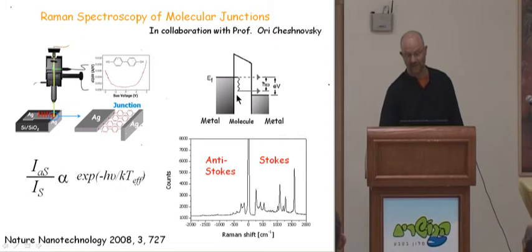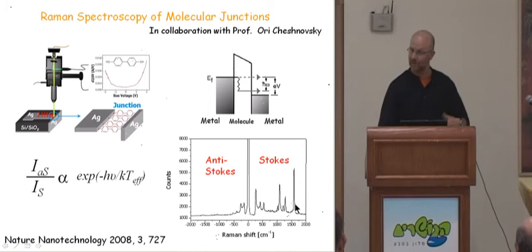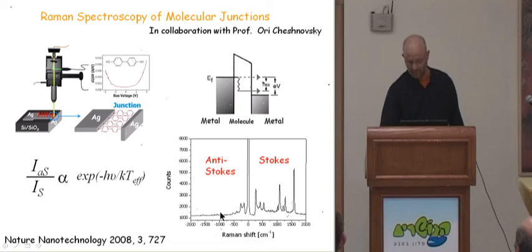When we pass current through the molecules, some electrons tunneling through inelastically excite vibrational modes — they lose some energy. Since they excite vibrational modes, we should see a change in the anti-Stokes Raman spectrum we are measuring. The Stokes signal is proportional to all vibrational modes present inside the junction. The anti-Stokes signal we measure is proportional to the excited vibrational modes. So as we pass current through the molecules, we excite vibrational modes and should see a change in the anti-Stokes signal from the junction.